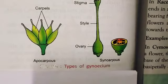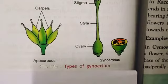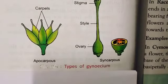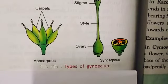The next condition is polycarpellary. Here, there are more than two carpels present. That condition is called polycarpellary. Examples you can give are ladyfinger and magnolia.